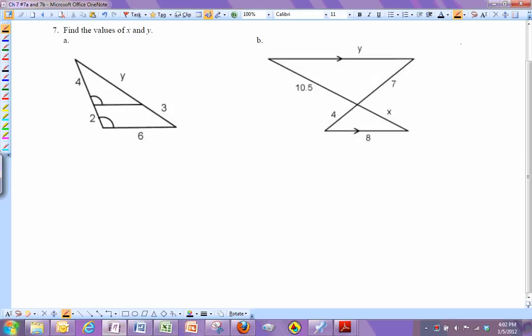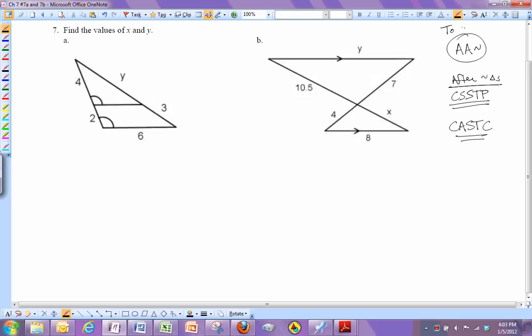We have this as a way of proving triangles are similar, and we have the fact that corresponding sides of similar triangles are proportional, and corresponding angles of similar triangles have to be congruent. So this is after similar triangles, and this is to get similar triangles.